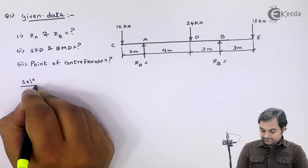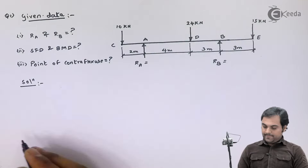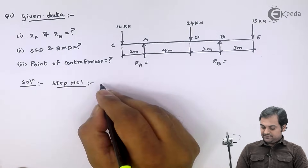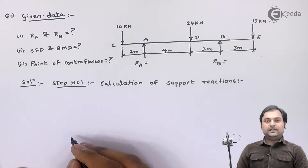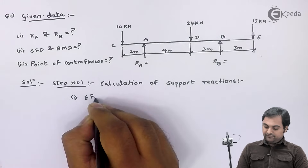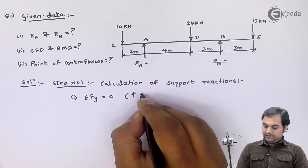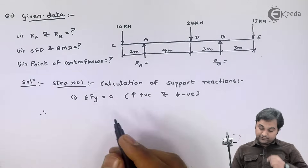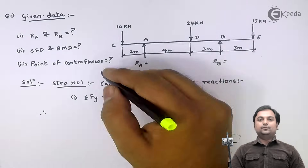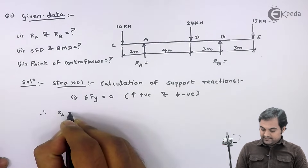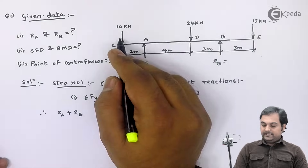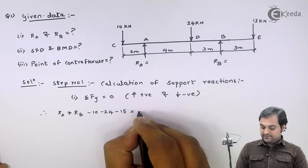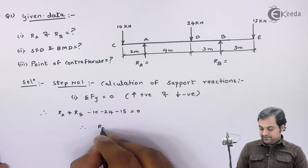Step one is calculation of support reactions. For the equilibrium condition, first summation of FY is equal to zero, where I will treat upward forces as positive and downward forces as negative. Therefore the sum of vertical forces: RA is upward and RB is upward, so both are positive — RA plus RB — and 10, 24, and 15 are downward, so minus 10 minus 24 minus 15 equals zero.